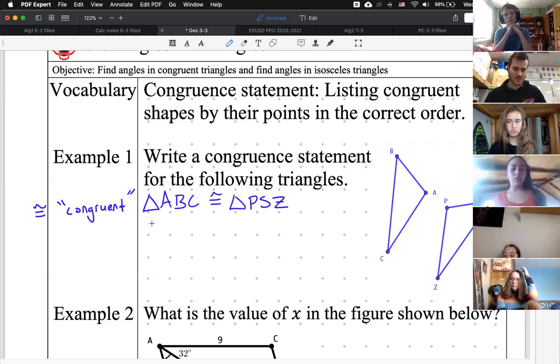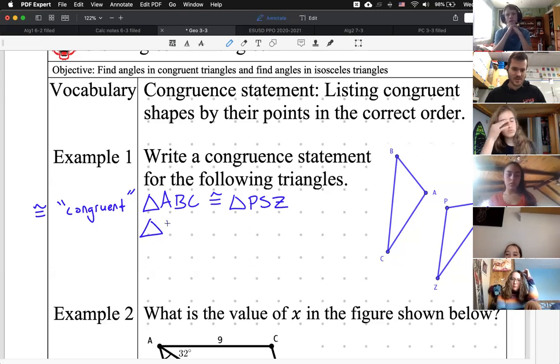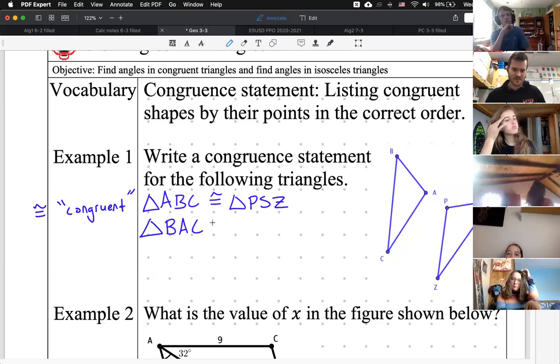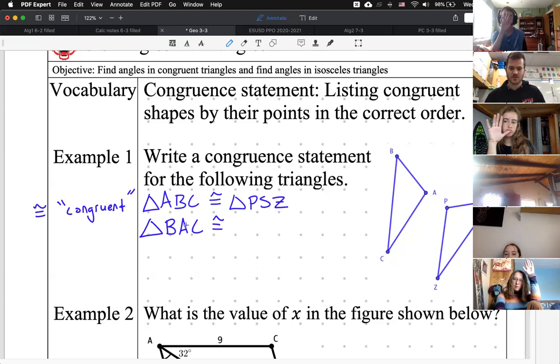But then you can choose a random one over here. So let's do triangle, I don't know, B, A, C. Can someone help me write a congruency statement if I had said triangle B, A, C? I see one hand, two hands, three hands. Charles, go for it.